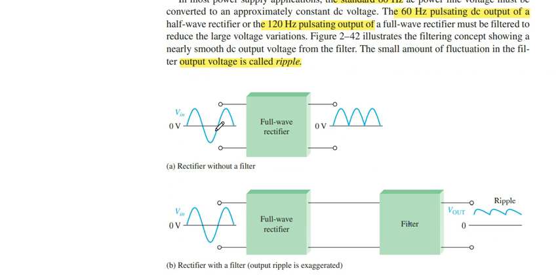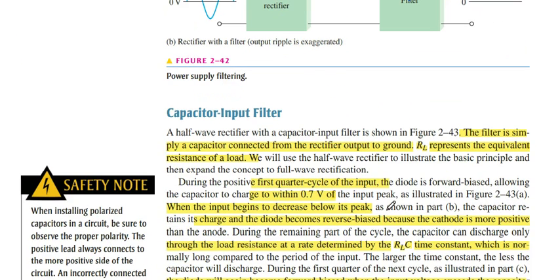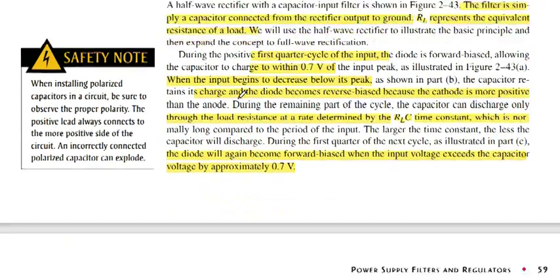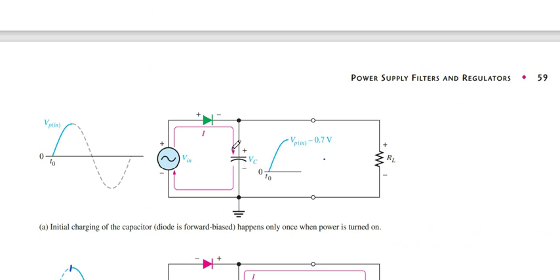When we give the AC input voltage and we get the pulsating DC voltage, this is not in pure form, so we pass through the filter circuit. First we use the capacitor input filter circuit. When we connect a capacitor in this form and make the circuit like that, what happens in forward bias from T0 to the peak value of input — the capacitor is going to charge as the voltage rises. At the peak value, the capacitor is at maximum charge.